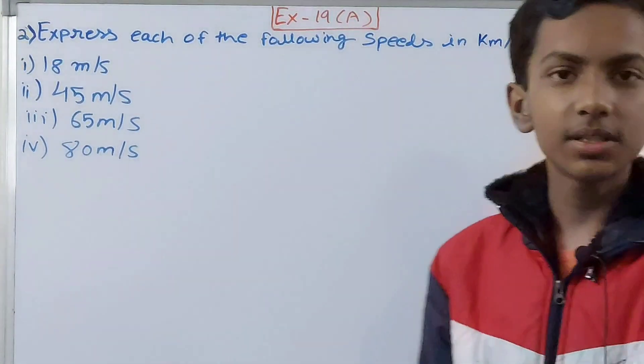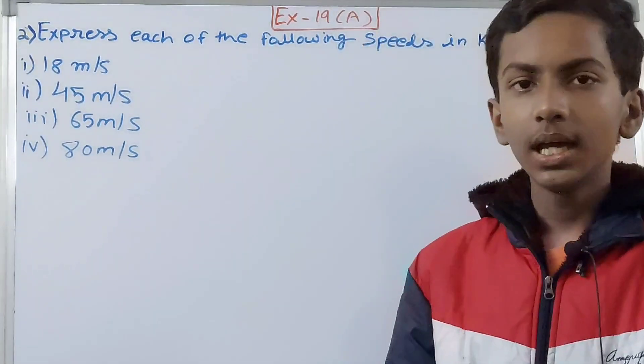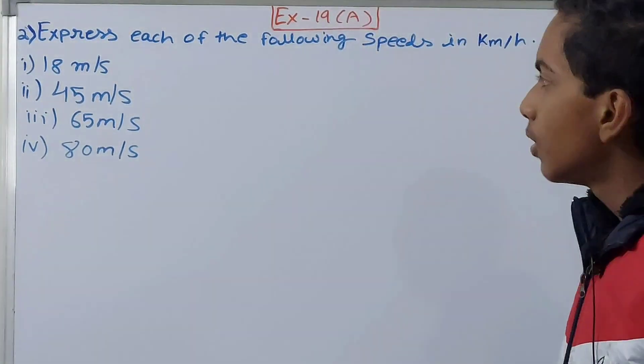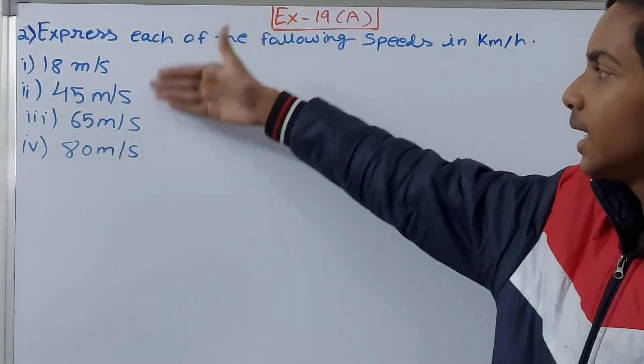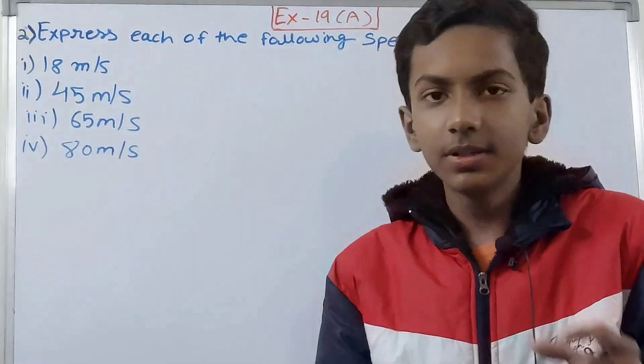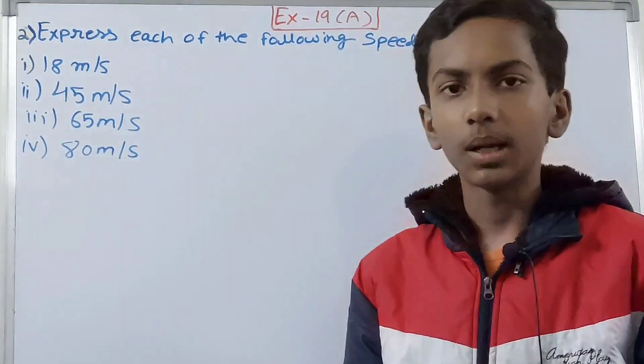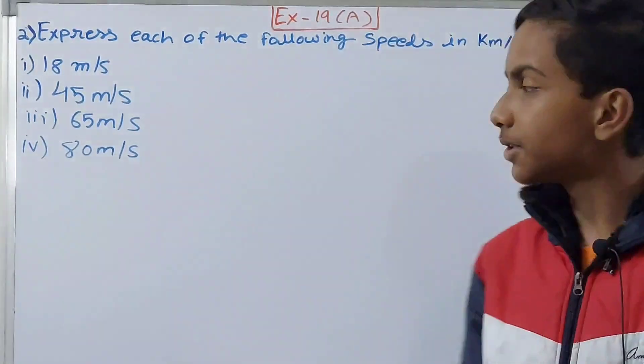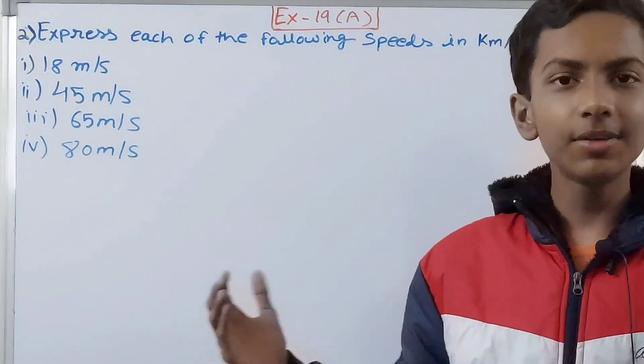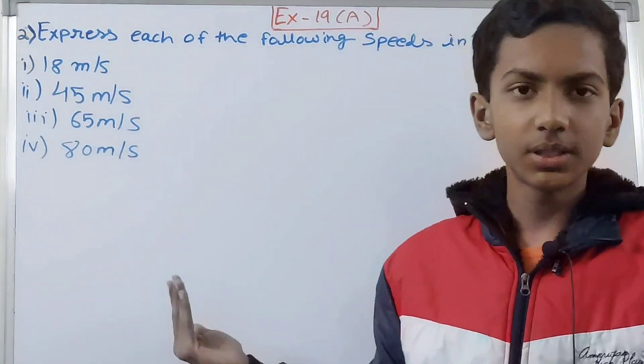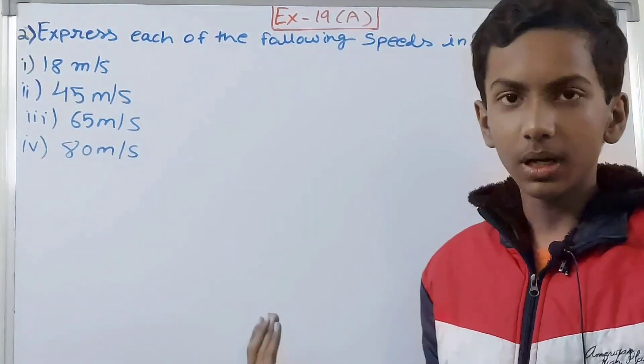The question says: express each of the following speeds in kilometers per hour. We have speeds given in meters per second, and we have to convert them to kilometers per hour. Accordingly, the numbers will also change.